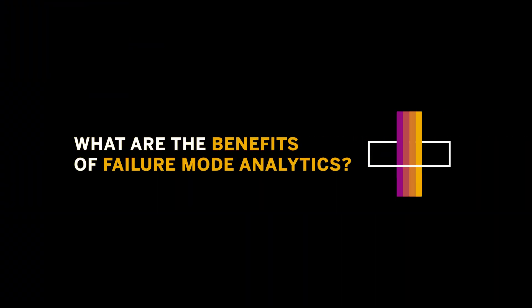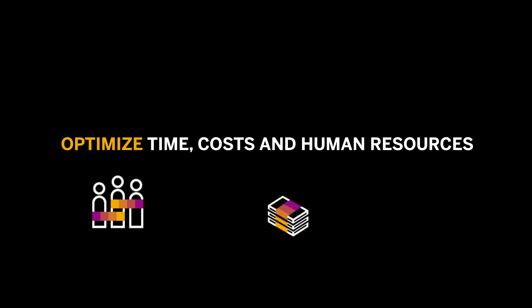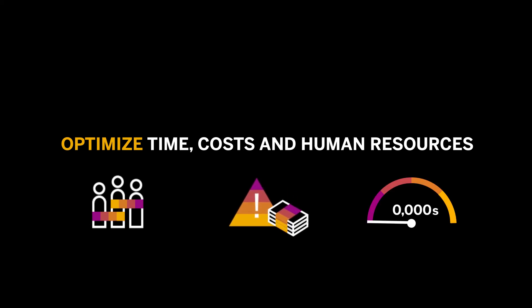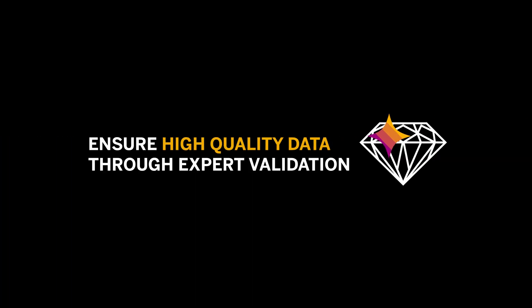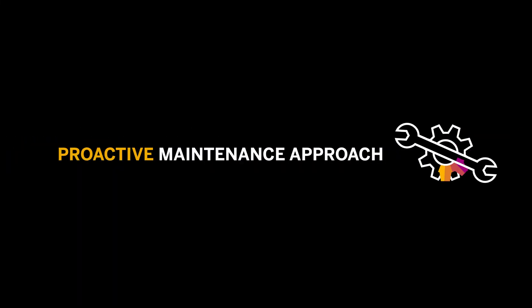So what are the benefits? Time and human resources savings are massive. The system can analyze historical notification texts and assign the most likely failure mode in a fraction of the time it would take a human to do manually. The expert validation step further ensures high quality data, meaning the results can be fed back into the machine learning engine to automatically assign the correct failure mode to incoming documents, enabling a proactive maintenance approach.